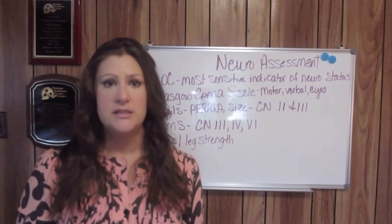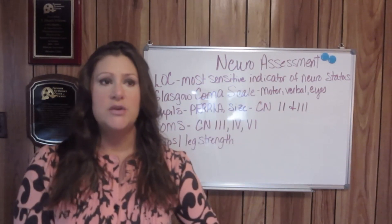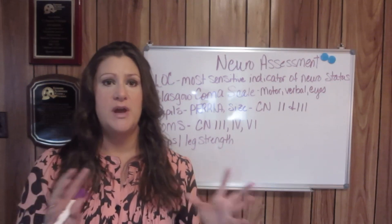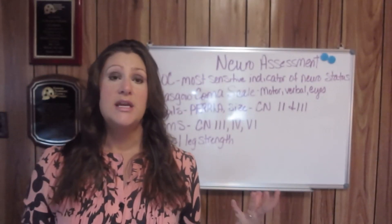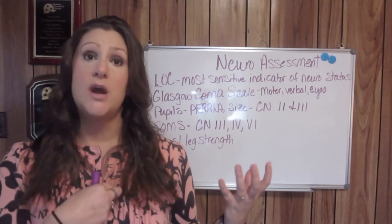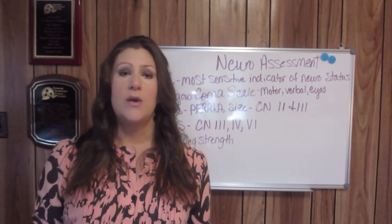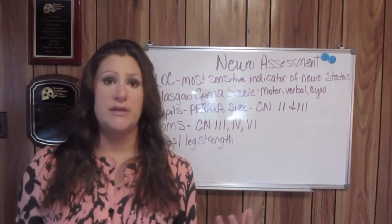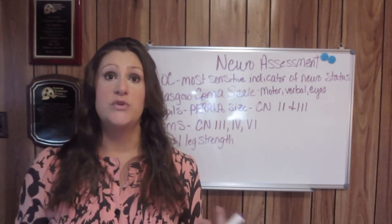If a patient does not obey commands, go one step down on the Glasgow Coma Scale. There are two levels of response to pain. You pinch the skin over the sternum and watch whether they brush your hand away — that is localizing pain, which is much better than the next step: withdrawal from pain.